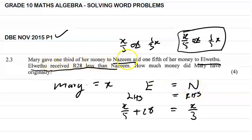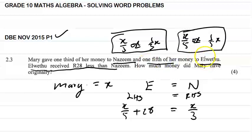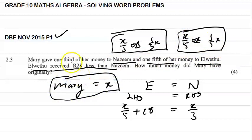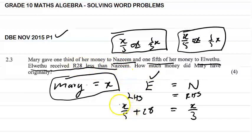Let's go through it one more time. Mary gave one third of her money to Nazim — that's x over three. She gave one fifth of her money to Alberto — that's x over five. Remember we're letting the amount Mary originally had equal to x. To formulate the equation: Alberto received 28 rand less than Nazim, so it's going to be x over five plus 28 equals the amount that Nazim receives, which is x over three.